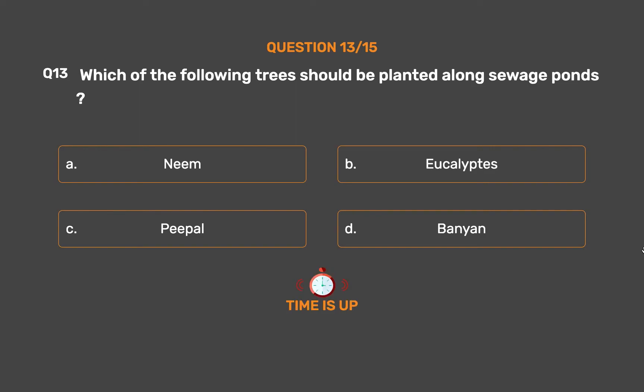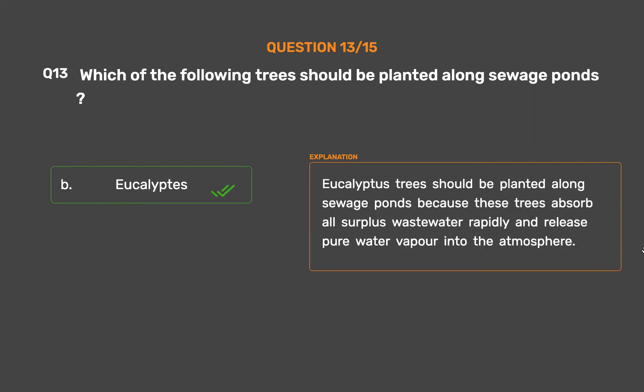The correct answer is Option B: Eucalyptus. Eucalyptus trees should be planted along sewage ponds because these trees absorb all surplus wastewater rapidly and release pure water vapor into the atmosphere.